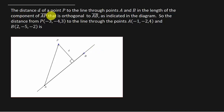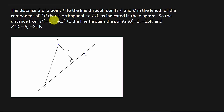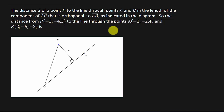It says the distance d of a point P to the line through points A and B. We've got a point P here, and we want to find the distance from this point P to this line A, B. This distance is perpendicular to the line from this point. The distance d is the length of the component of AP that is orthogonal to AB, as indicated in the diagram. So, the distance from point P, which has these coordinates, to the line through the points A and B with their coordinates — that's what we've got to answer.